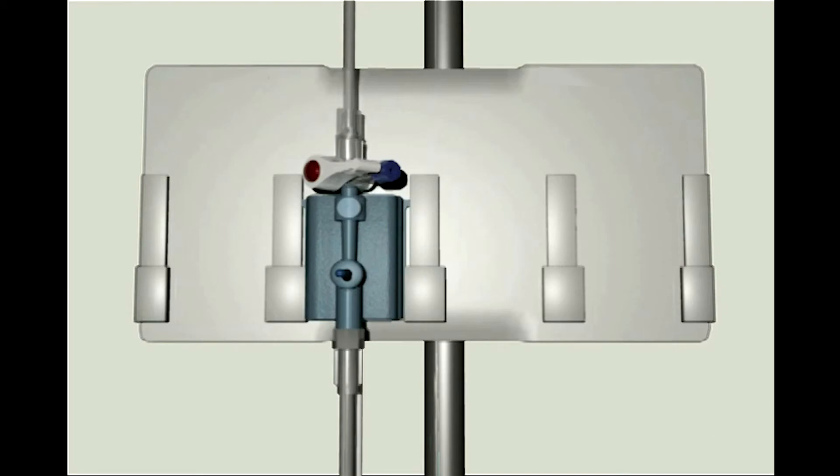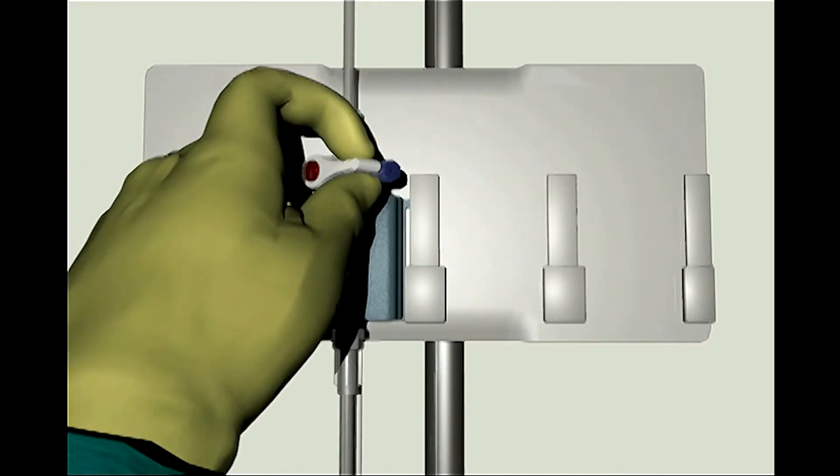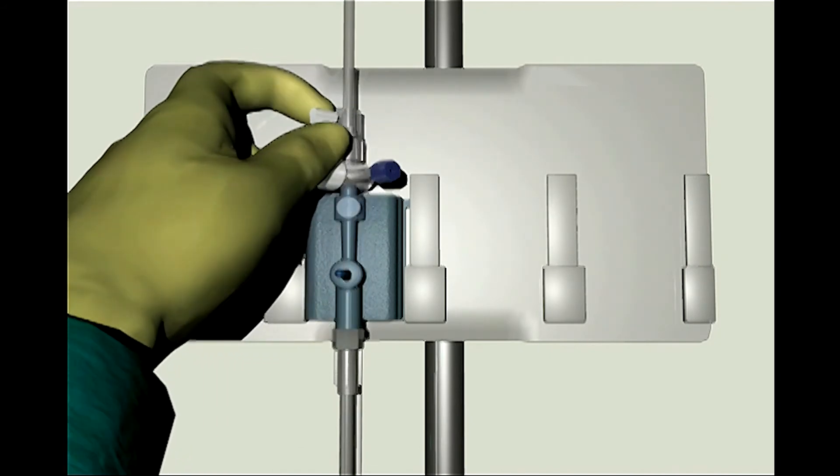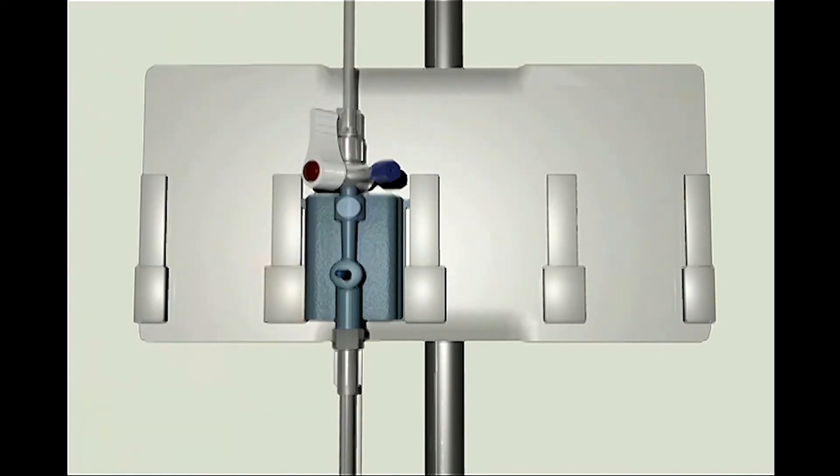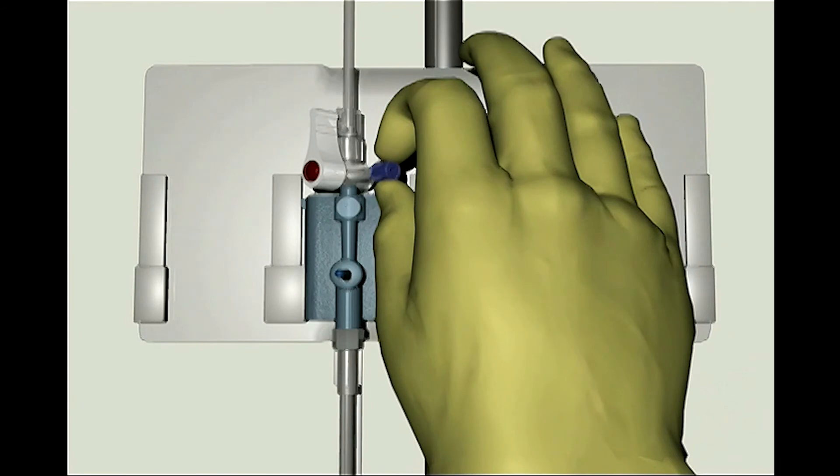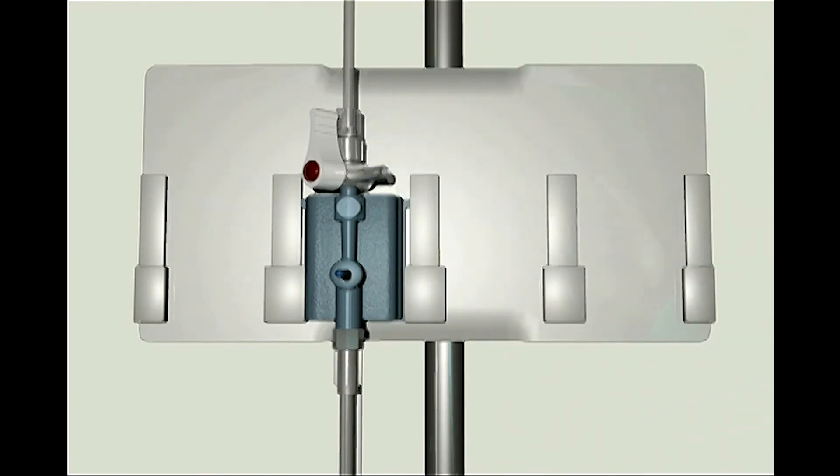The TruWave transducer must be zeroed to remove the effects of atmospheric pressure. Step 3: Open the stopcock above the transducer to atmospheric air by turning the stopcock toward the patient's pressure tubing and away from the TruWave transducer. Then remove the non-vented cap. Perform this maneuver while maintaining sterility of the cap and stopcock port.